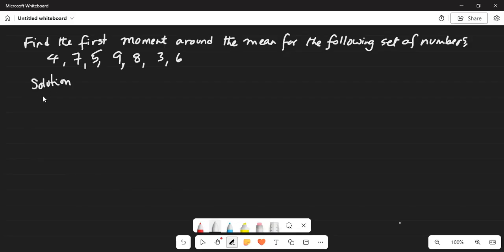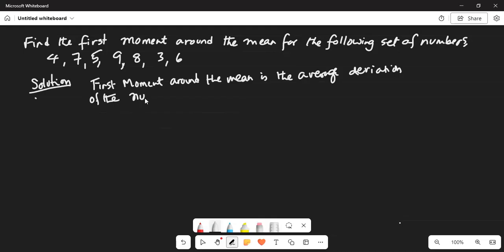Find the first moment around the mean for the following set of numbers: 4, 7, 5, 9, 8, 3, 6. So my solution: First moment around the mean is the average deviation of the numbers from the mean.